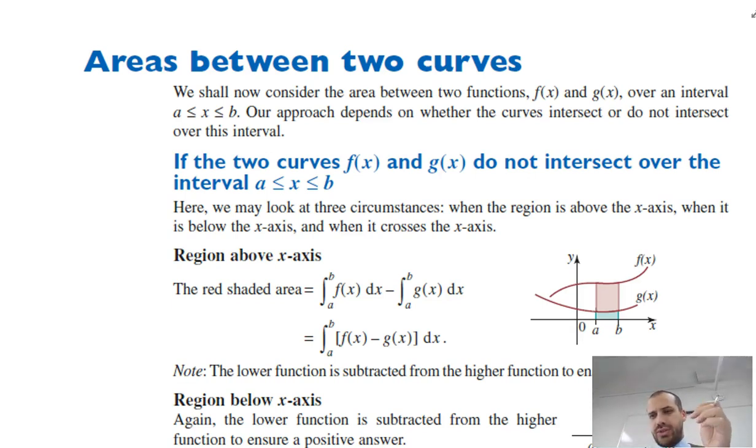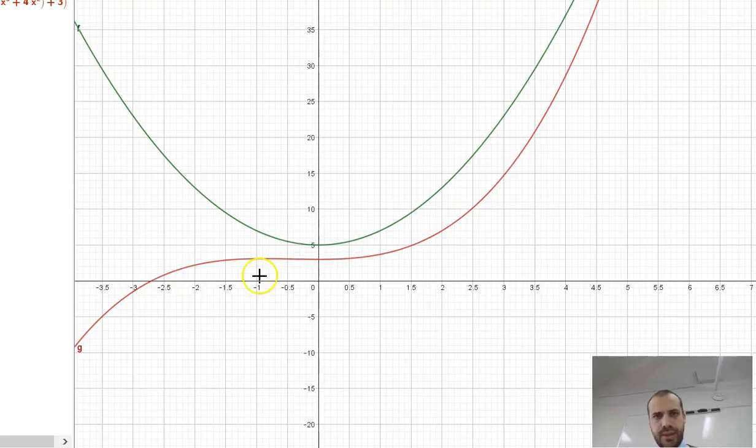In this video we're talking about the area between two curves. So let's say I've got this green curve here and I've got this red curve here and I want to find the area between the two curves when x equals 1 and when x equals 4.